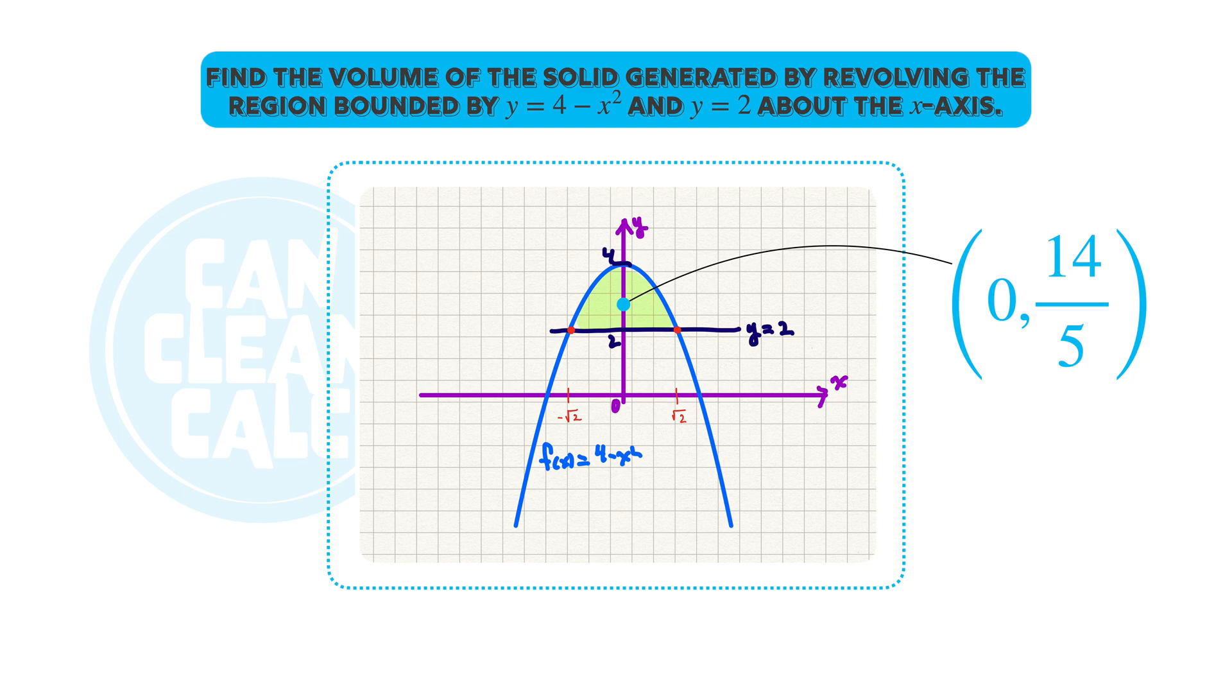Find the volume of the solid generated by revolving the region bounded by the parabola y = 4 - x² and the horizontal line y = 2. Revolve that region about the x-axis.